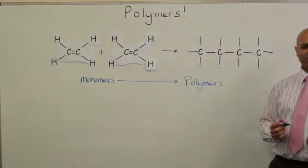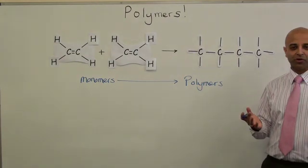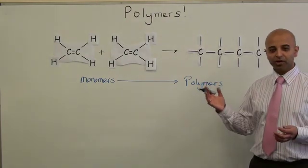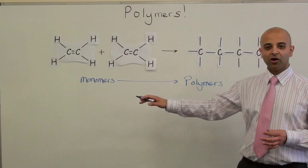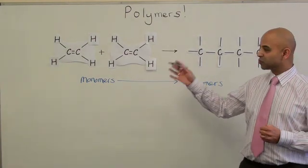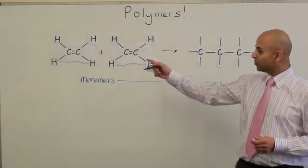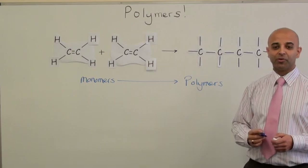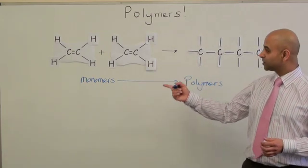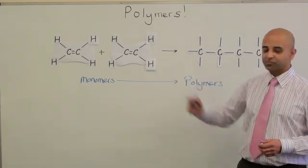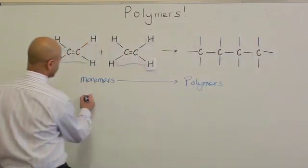You might think monomers and polymers are just new confusing terms, but not really when you think about it. Because all the monomers are structures that you've seen before, which are the alkenes — the carbon-to-carbon double bond compounds. The simplest one is ethene.